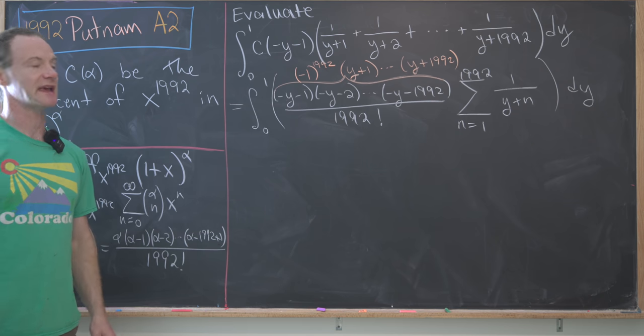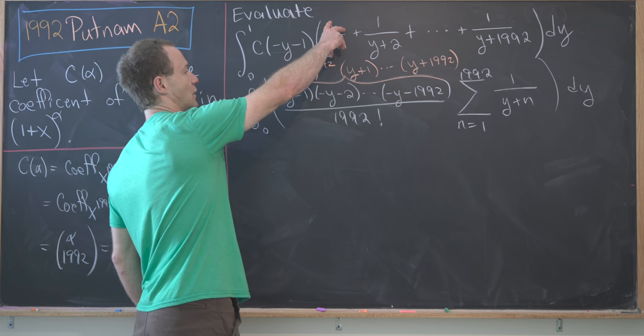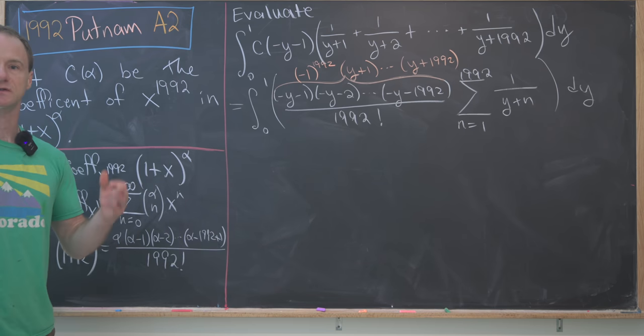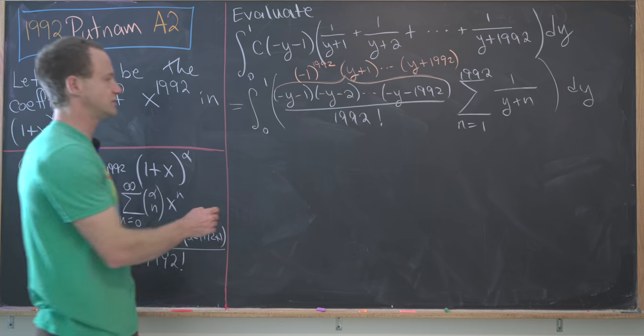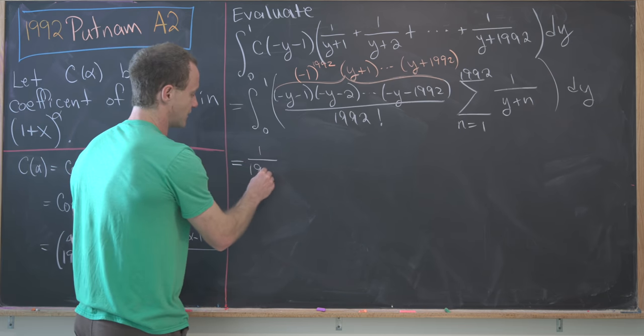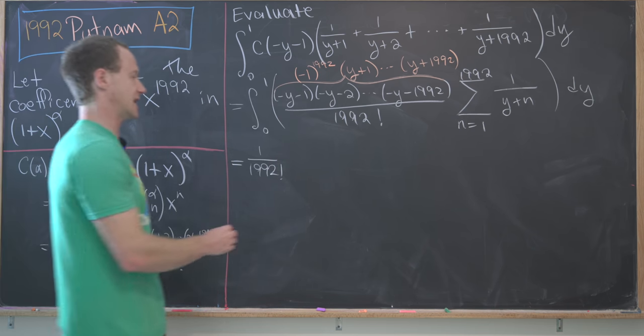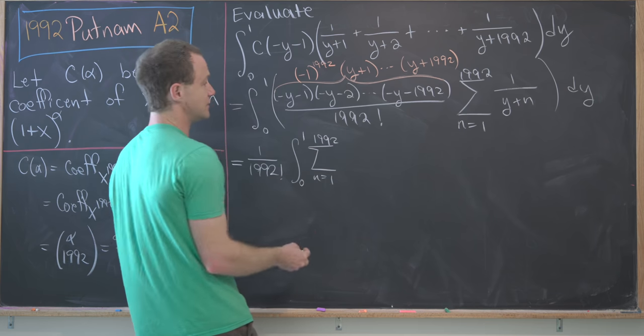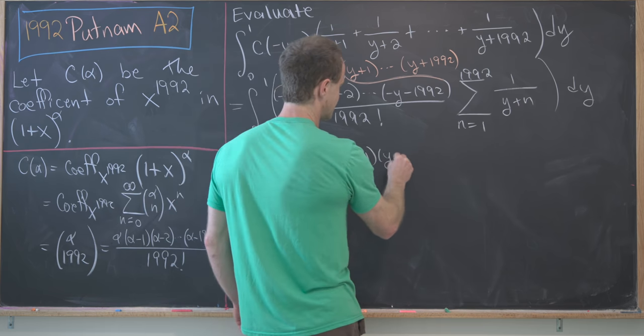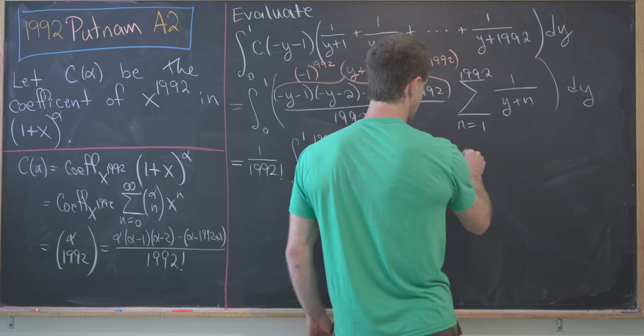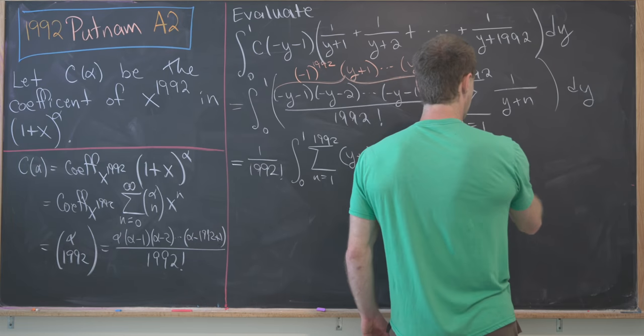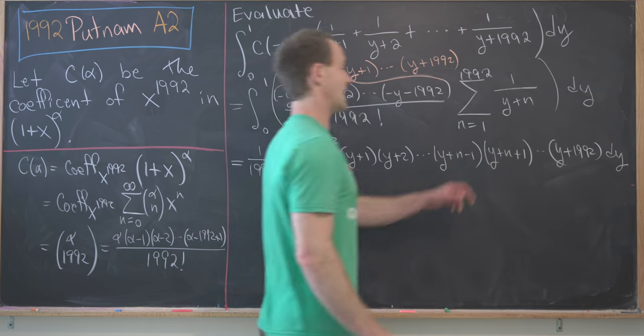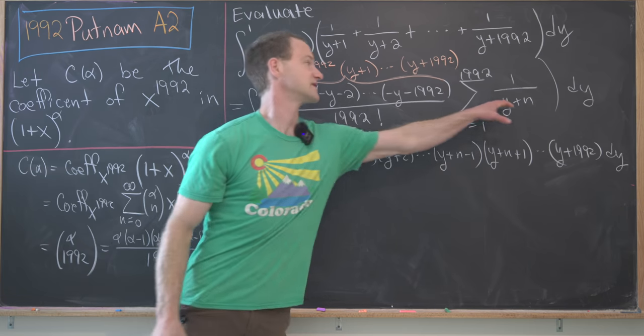Notice that one term cancels for every term from the sum. So in the first term, the (y+1) cancels. In the second term, the (y+2) cancels. And in that last term, the (y+1992) cancels. So we want to encode that carefully. This is 1/(1992!) times the integral from 0 to 1 of the sum as n goes from 1 to 1992 of (y+1)(y+2)...(y+n-1)(y+n+1)...(y+1992), where I have removed the (y+n) term because it canceled out in the denominator.